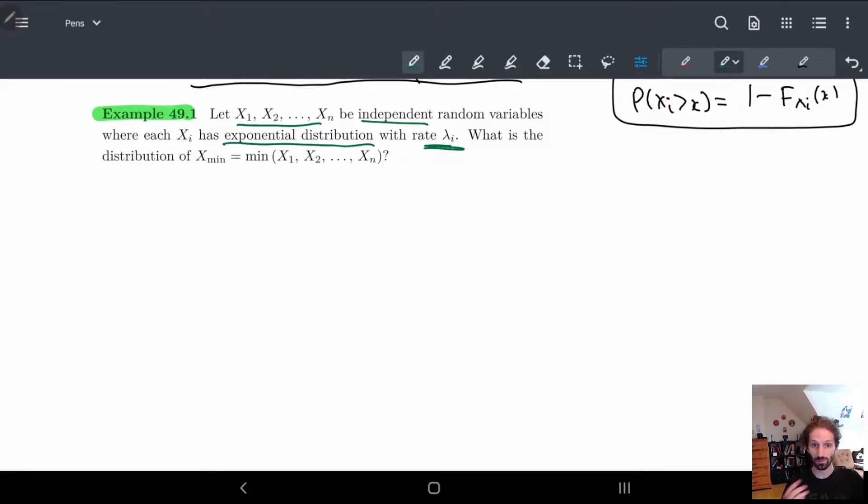So they all have different rates. And now the question becomes, well what is the minimum? Okay, so first off we need to calculate the anti-derivative, in other words the CDF of the Xᵢ. So here if we have f_Xᵢ(x), this is remember just λᵢ e^(-λᵢx). So this is the probability density function for the exponential distribution.